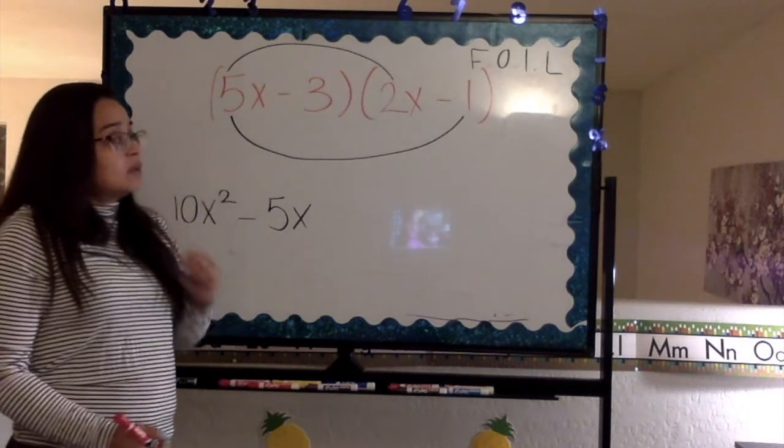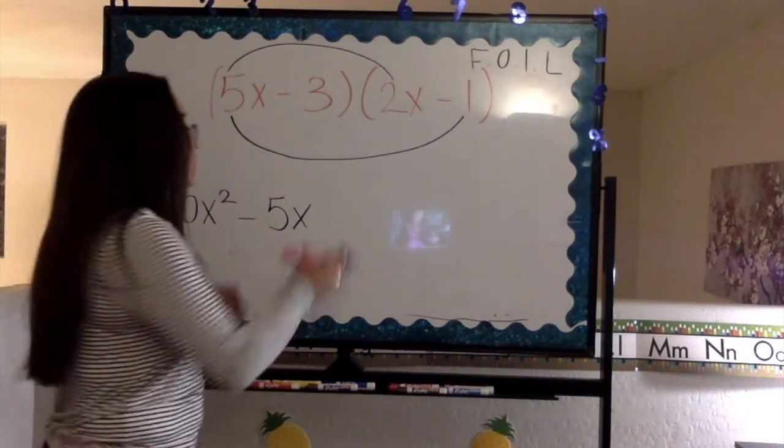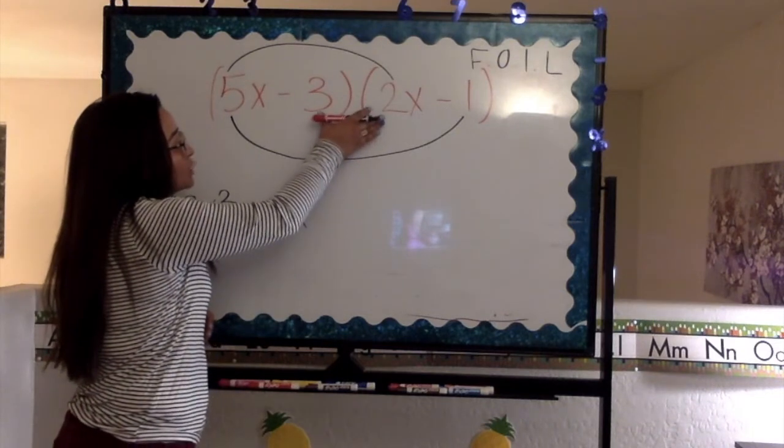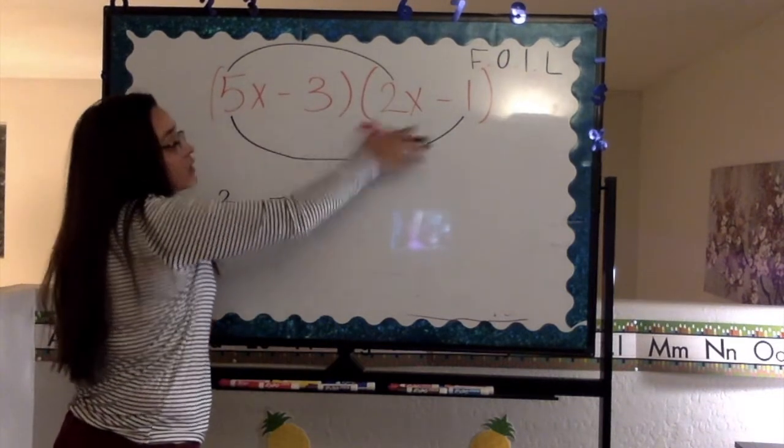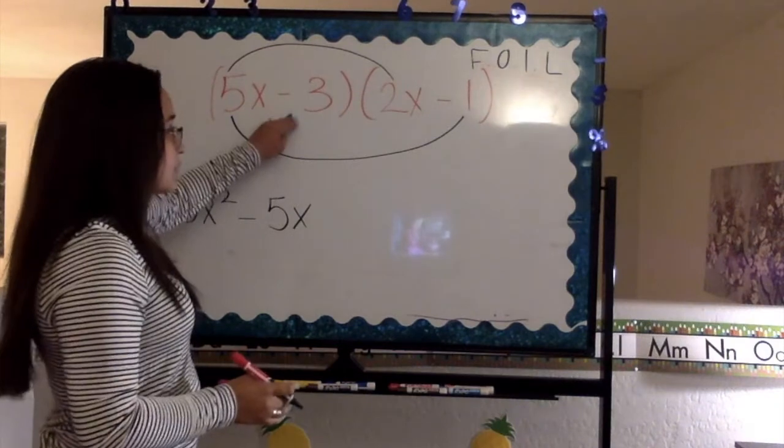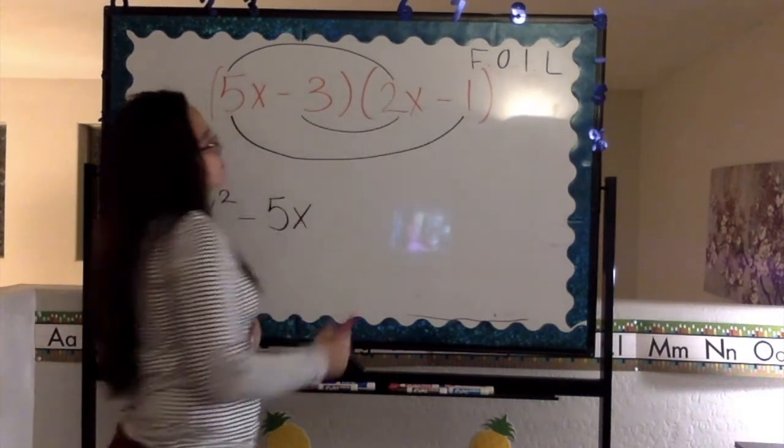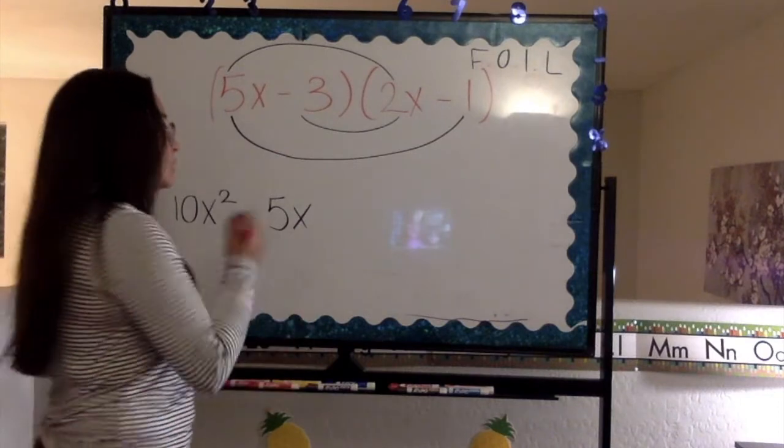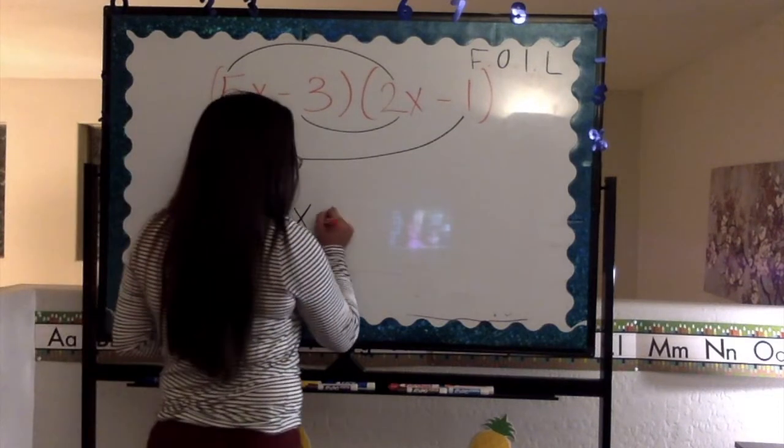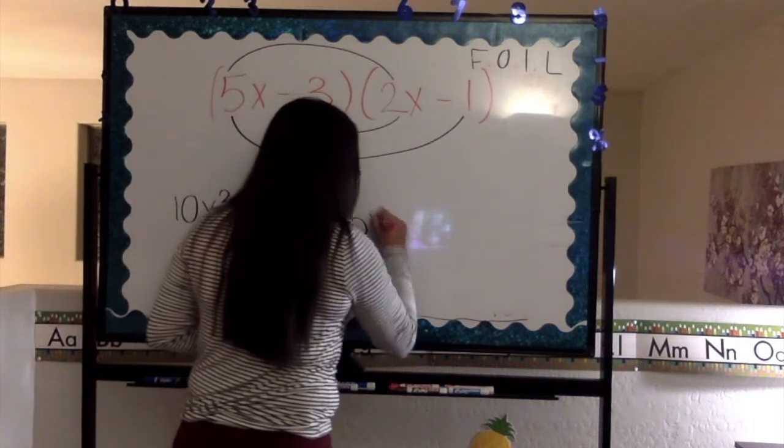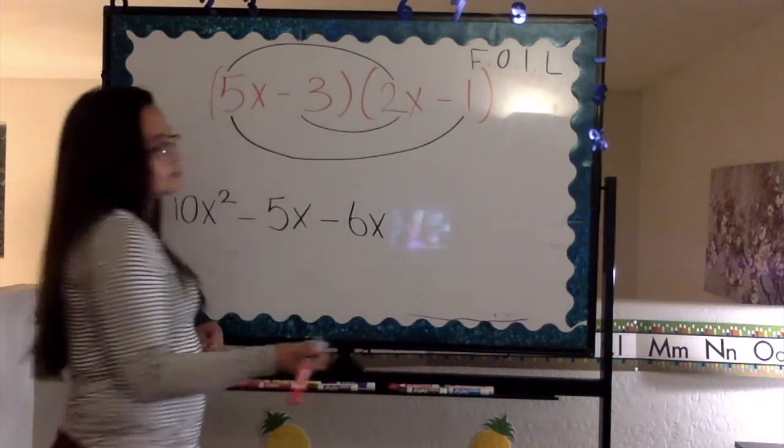Now, inner. We're going to multiply the two inner numbers of the problem. We have negative 3 and 2x. We're going to multiply that. That'll give us a negative 6x.